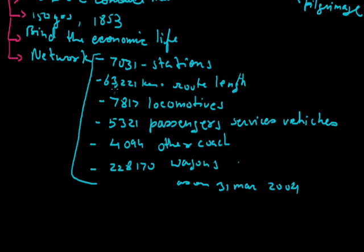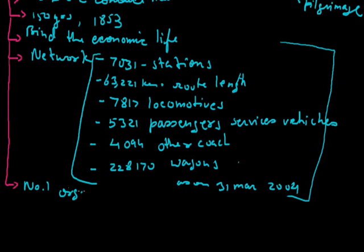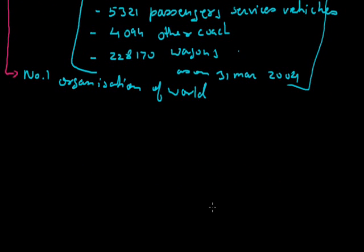This data shows the huge network of Indian Railway, which is the second largest railway network. Not only it is the second largest railway network, but also number one organization of world, means it gives employment to more than 15 lakh people and indirectly more than 25 lakh people getting job from Indian Railways. This shows the hugeness of Indian Railways organization. It is so huge that a separate railway budget is presented by the railway ministers before a general budget.